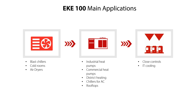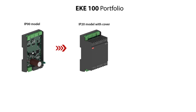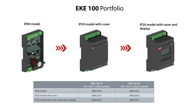And finally, rooftops as seen here, closed controls, and IT cooling as specified here. The EKE100 portfolio consists of six models, which are the EKE100 with IP00 rating for 1 or 2 bipolar expansion valve control, and the EKE100 with IP20 rating and cover for 1 or 2 bipolar expansion valve control. Here you see an overview with the code numbers of the different EKE100 models.